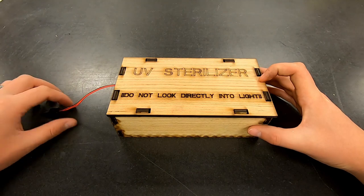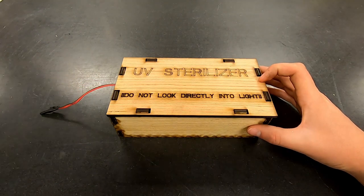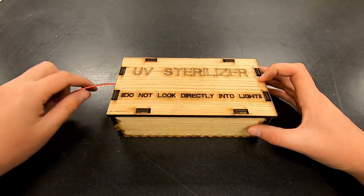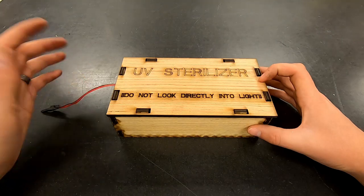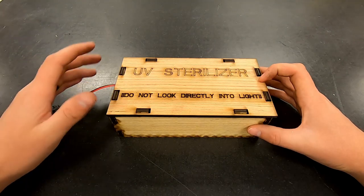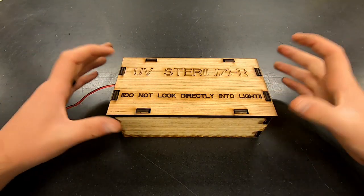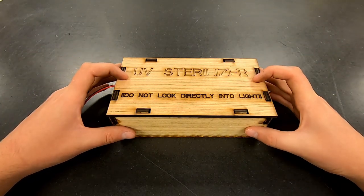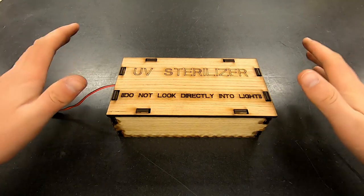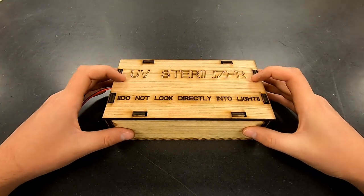At that point you can plug in your LED strip to pretty much any USB power source—a cell phone charger, a laptop or computer, anything that has a USB port. This will power on your LEDs, which will emit the UV light which will actually do the sterilization.